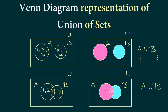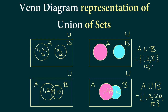So when we do A union B, we take all elements of A, all elements of B, but without repetitions. The elements are 1, 2, 20, and 10. We could also write the first example similarly as {1, 2, 3, 10, 20}.